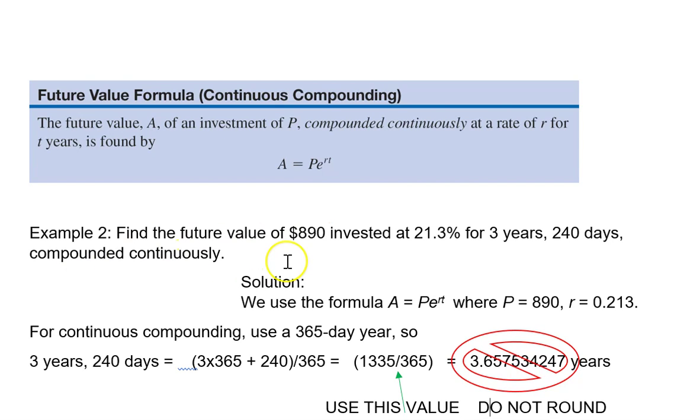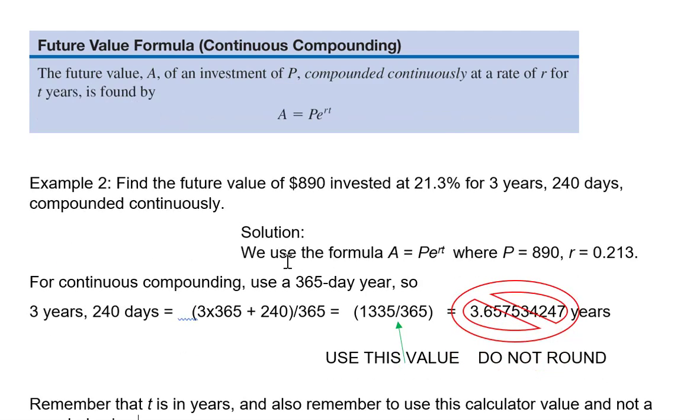So in example 2, I asked to find the future value of $890, invested at 21.3% for 3 years, 240 days, compounded continuously. So because it says compounded continuously, we know we're going to be using the PERT formula. When we use this formula, we're going to put in 890 for P, the decimal equivalent of 21.3% or 0.213 for R. But then we need to figure out what is our time as a fraction of a year.